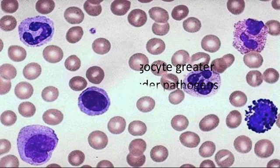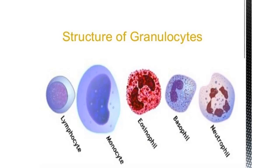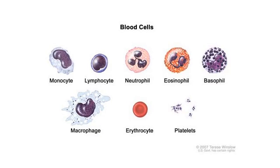Blood is mainly composed of white blood cells, red blood cells, platelets, and plasma. Plasma is the fluid part of the blood and represents more than half of blood's volume. White blood cells make up about 1% of the entire blood volume, and red blood cells make up about 45%.